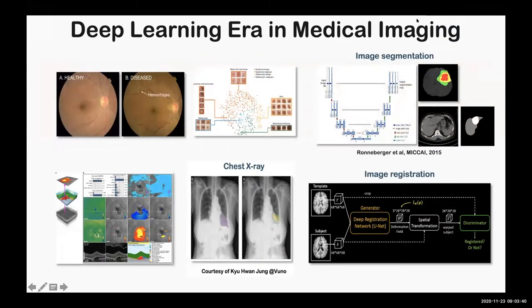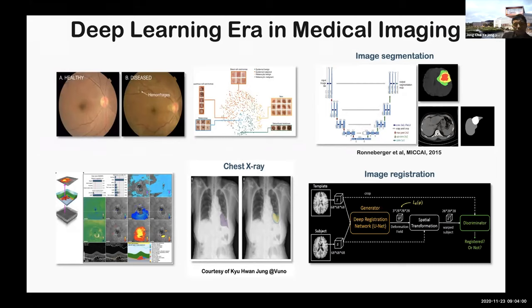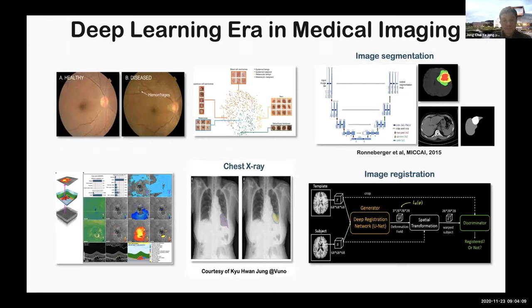In recent years, thanks to GPU technology and medical big data, deep learning has become the mainstream theme in the medical imaging area. For example, from fundus imaging for diabetic diagnosis, skin cancer diagnosis, ophthalmology diagnosis using OCT, and diagnosis using chest X-ray — deep neural network technology is now achieving similar or even superior performance compared to doctors. Deep tech companies have been emerging in many medical imaging areas, and learning-based algorithms have become state-of-the-art technologies, from diagnosis to areas such as image segmentation, image registration, and more.